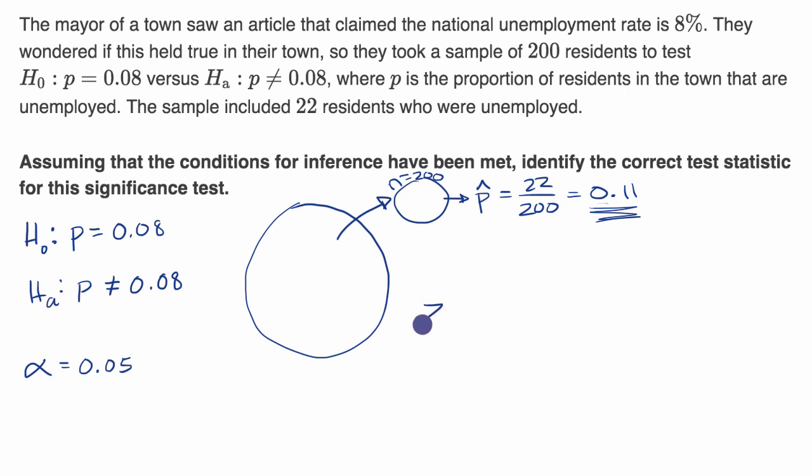And so what we want to do is figure out the number of standard deviations. And so that would be a z-statistic. And so how do we figure it out? Well, we can figure out the difference between the sample proportion here and the assumed population proportion. So that would be 0.11 minus 0.08 divided by the standard deviation of the sampling distribution of the sample proportions. And we can figure that out.